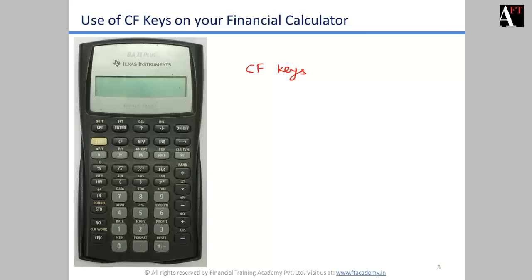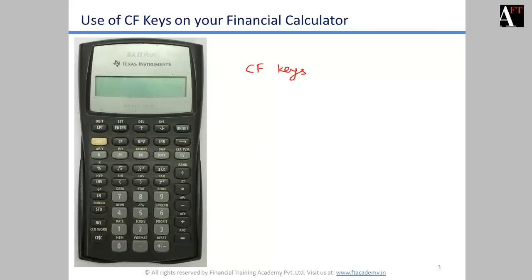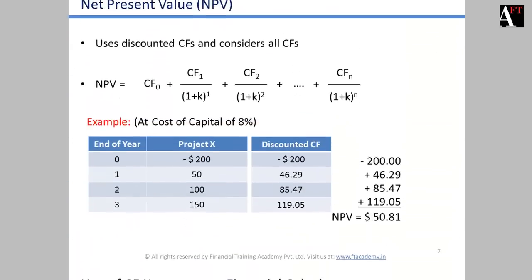First, clear all the memory by pressing Second, then Clear Work. Press Cash Flow, then Second, then Clear Work — that is the CE/C button — to erase all previous numbers in the cash flow memory. On the display you will see CF0. Type in 200 as a negative value using the plus/minus key, then press Enter, then the down arrow key. This brings you to C01, which in our case is 50.